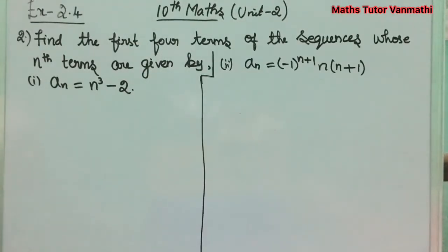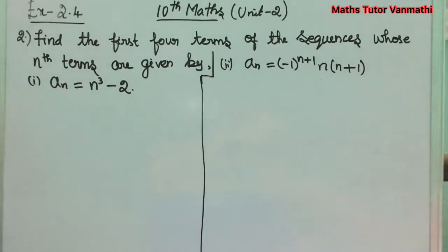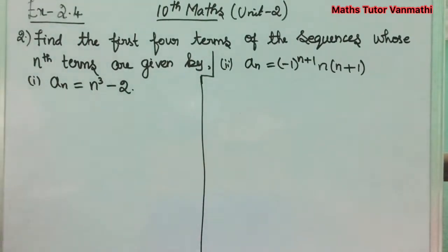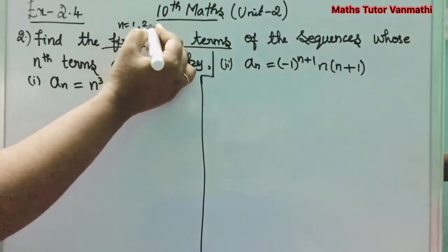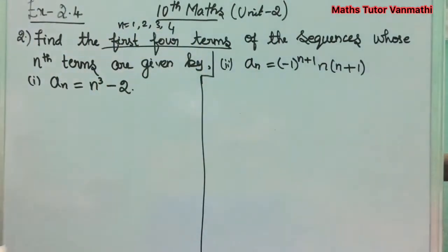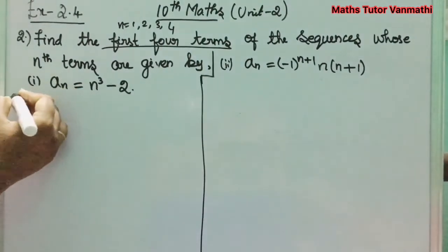Exercise 2.4, second problem: Find the first 4 terms of the sequence whose nth terms are given by three subdivisions. First: a_n = n³ - 2. Second: a_n = (-1)^(n+1) · n(n+1). Third: a_n = 2n² - 6. We will find the first 4 terms, i.e., n = 1, 2, 3, 4. Let's solve the first subdivision.